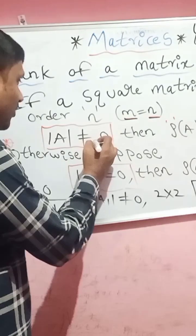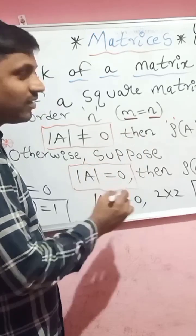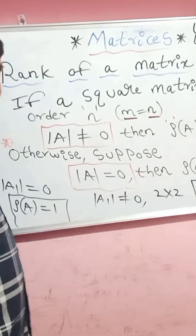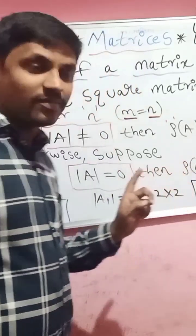If det A is not equal to 0 of order 3, then rank should be 3. So suppose det A is 0, then rank should be less than 3.